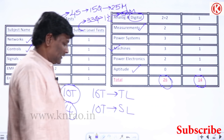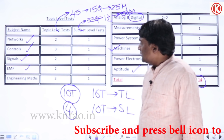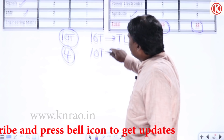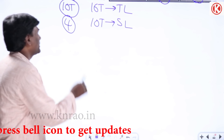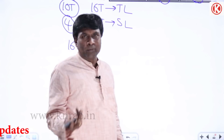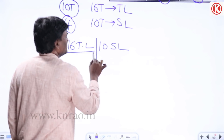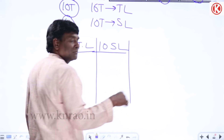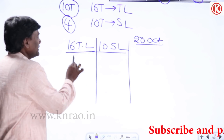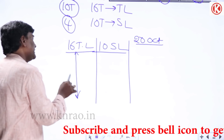Now, we are supposed to start with 16 topic-level tests and 10 subject-level tests. For example, in networks there will be two topic-level tests and one subject-level test. Along with the online test strategy, you have to start preparing those particular topics. For example, if anyone starts attempting online tests from 20th October, giving 45 minutes every day, taking one test per day will take 16 days.